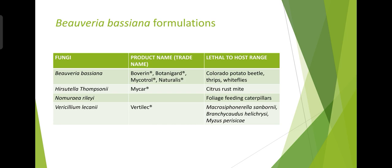Here you can see some Beauveria bassiana formulations — their trade names and host range. Beauveria bassiana is commercially available under the trade names Bovarian, Botanigaard, Mycotrol, and Naturalis. The host range includes Colorado potato beetle, whiteflies, and thrips.